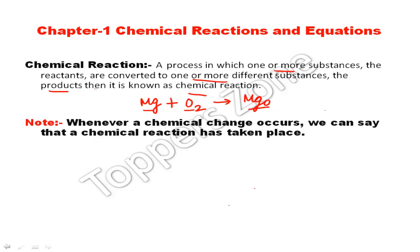Whenever a chemical change occurs, we can say that a chemical reaction has taken place. Chemical change is the change in which a new substance is formed. For example, when Mg and O2 react, the new product formed is Magnesium Oxide. So wherever there is a new product formed, we can say it is a chemical change.